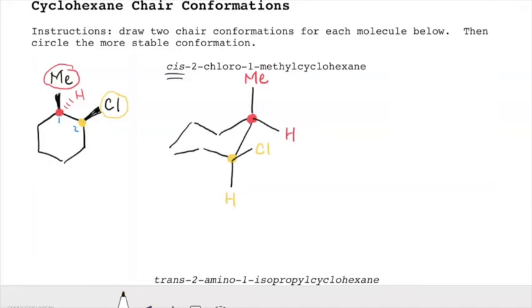Let's do our ring flip. To do that, we'll draw this ring backwards. We have to remember which carbons we're looking at. Put our axial substituents in, then our equatorial substituents, and now fit everything in here. So Me, this is an H. Cl, there's an H here.